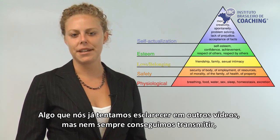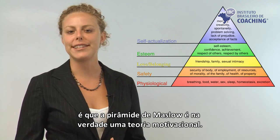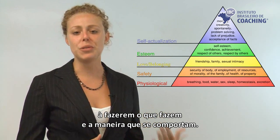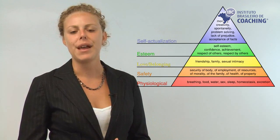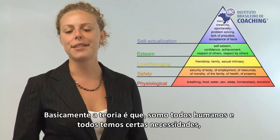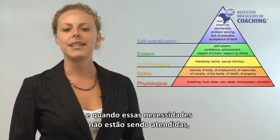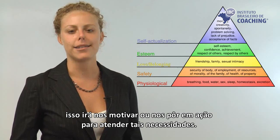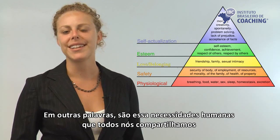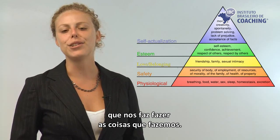One thing we've tried to make clear in previous videos is that Maslow's hierarchy of needs is actually a motivational theory — his look at what actually motivates people to do the things that they do and behave the way that they behave. The theory goes that we're all humans and we all have certain needs, and when those needs are not being met, it will motivate us or put us into action toward trying to fulfill them. It's these human needs that we all share that actually motivate us to do the things that we do.